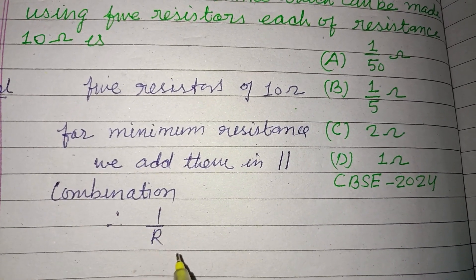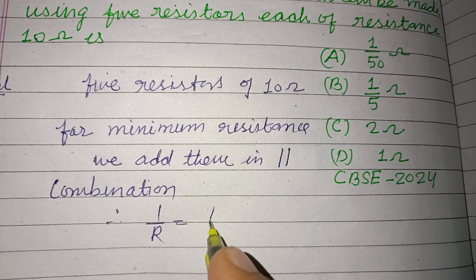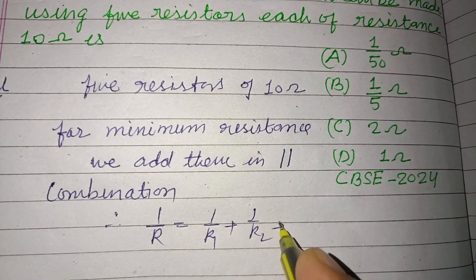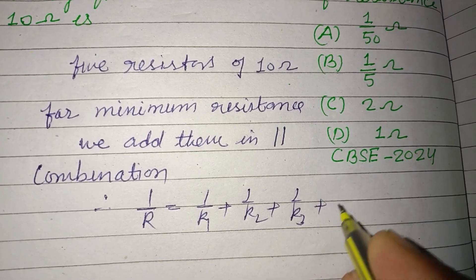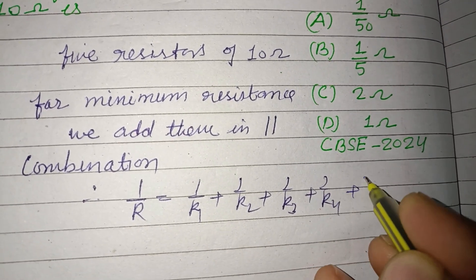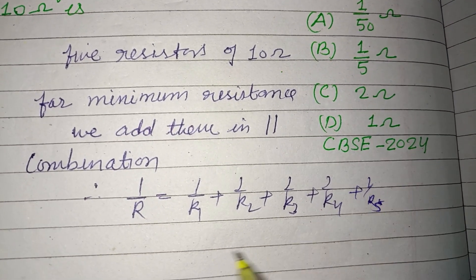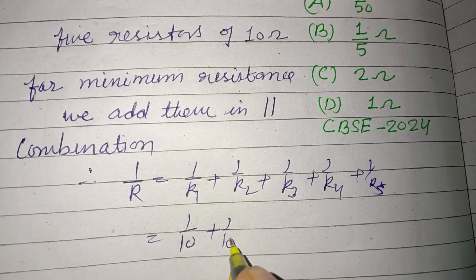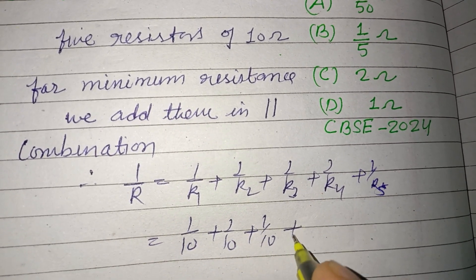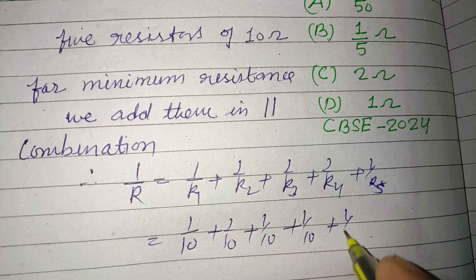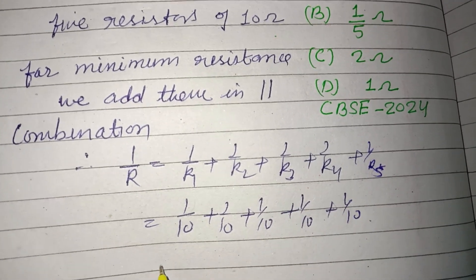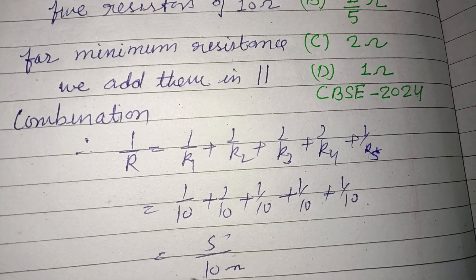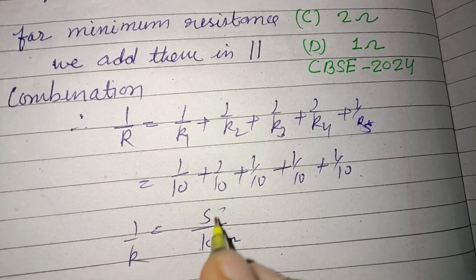Therefore, equivalent resistance is 1/R = 1/R1 + 1/R2 + 1/R3 + 1/R4 + 1/R5. Substituting values: 1/10 + 1/10 + 1/10 + 1/10 + 1/10, which gives 5/10 ohm.